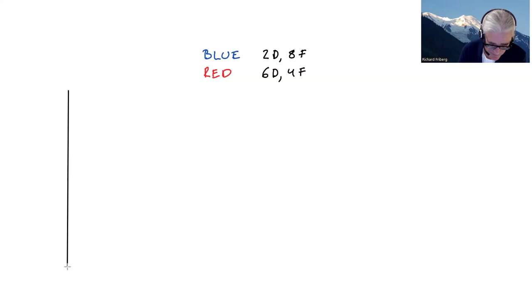So let's start with drawing. We say that we want to illustrate these endowments, so start with Blue and think of two axes where we're measuring number of drinks that Blue has on the vertical axis and the amount of food Blue has on the horizontal axis.